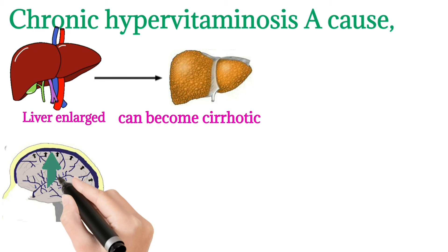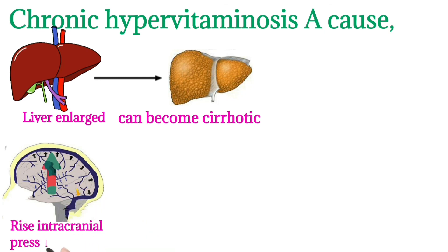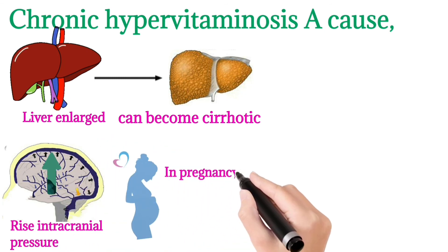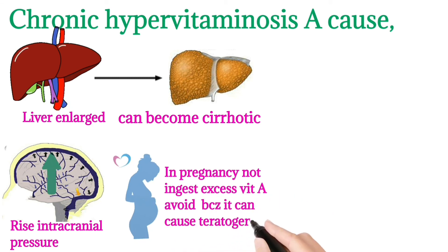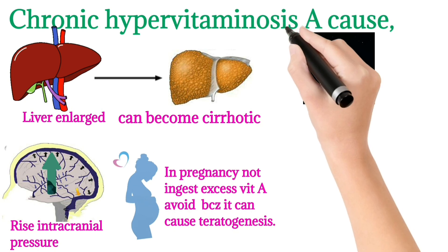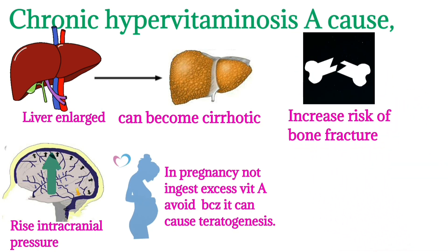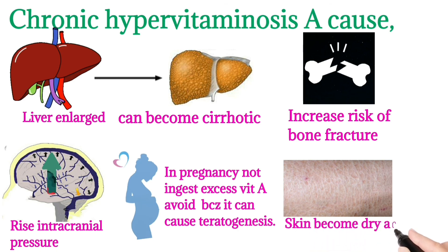Chronic hypervitaminosis A causes liver enlargement, which can lead to cirrhosis. It also raises intracranial pressure. During pregnancy, excessive Vitamin A should be avoided because it can cause teratogenesis. Additional effects include increased risk of bone fracture and dry, pruritic skin.